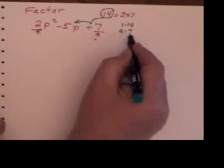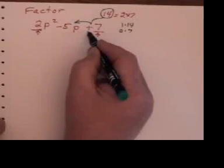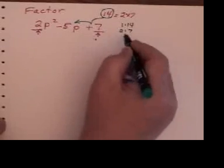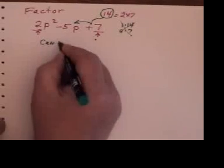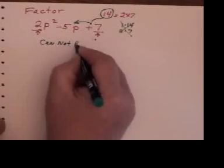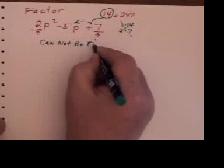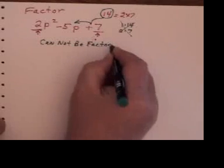You'll notice that 2 times 7 subtracts to make 5, but that's not a subtract sign. So in fact, none of these combinations work. So my answer to this one is cannot be factored. Cannot be factored.